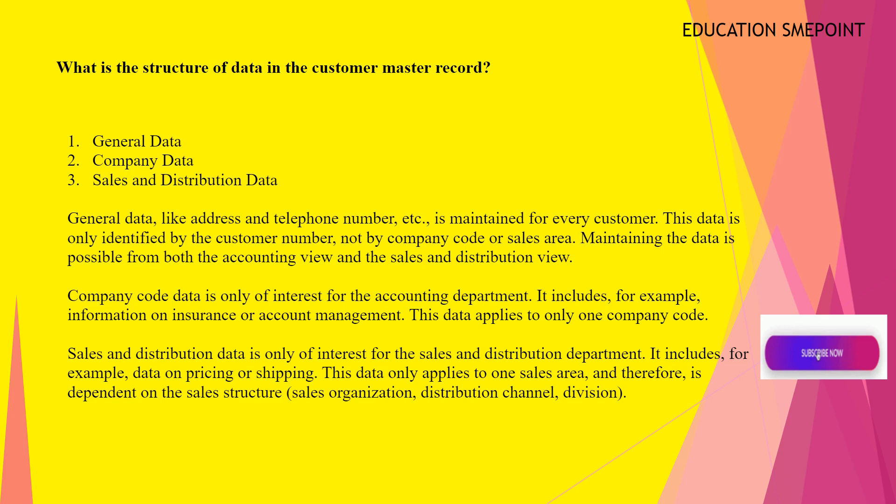Maintaining the data is possible from both the accounting view and the sales and distribution view. Company code data is only of interest for the accounting department. It includes, for example, information on insurance or account management. This data applies to only one company code.